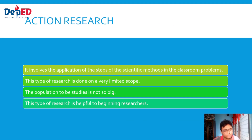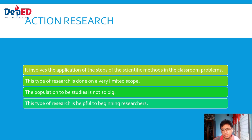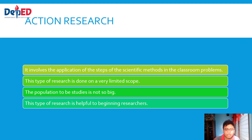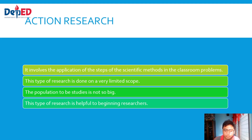Action research involves the application of the steps of the scientific method to classroom problems. This type of research is done on a very limited scope — the population of the study is not so big. It is helpful to beginning researchers. In the education field, we do action research: we look at the problems in the classroom, then try to solve that problem. It's essentially an applied research in an educational setting.